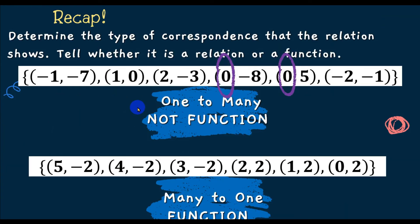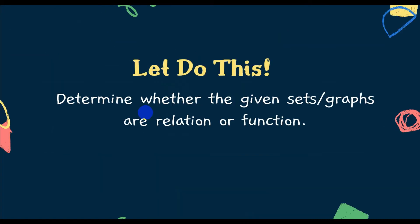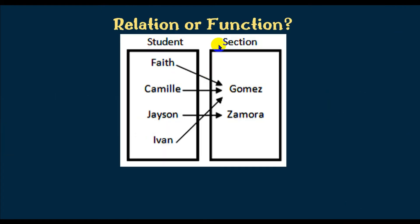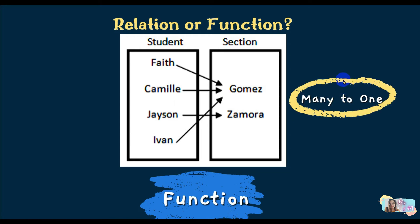Let's proceed to another activity: determine whether the given sets or graphs are relations or functions. First, a mapping diagram where x elements are student names and y elements are sections. Faith → Gomez, Camille → Gomez, Jason → Zamora, Ivan → Gomez. No student name repeats in x, so this is a many-to-one correspondence and is a function.